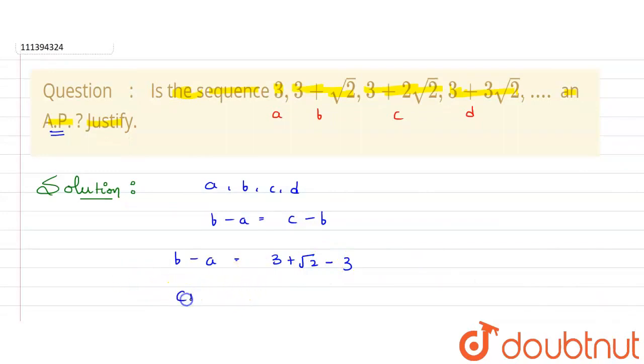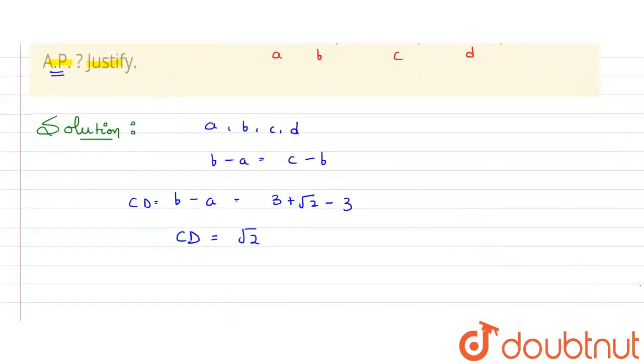So, B minus A value will equal the common difference. I am saying CD. CD means common difference. This is our CD. Common difference will equal root 2. We have got that. Common difference of first two terms is root 2.